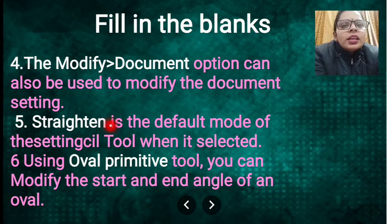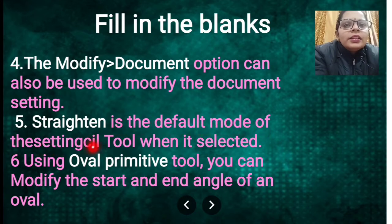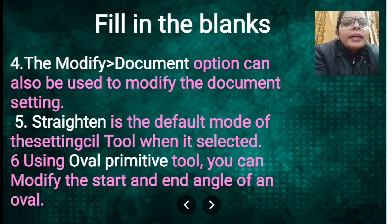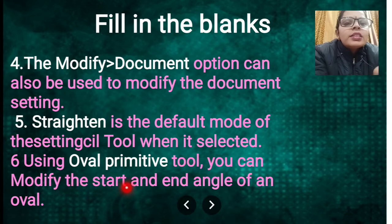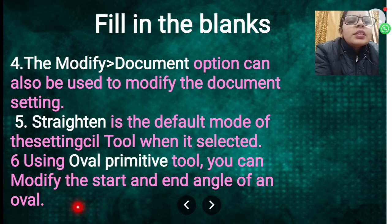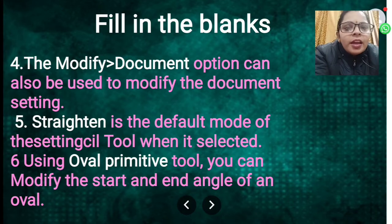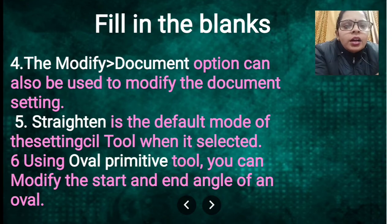Next fill in the blank: the blank is the default mode of the pencil tool when it is selected. The answer is Straighten mode. Next: using the blank tool you can modify the star and angle of the oval. The answer is Oval Primitive tool — for the oval shape we use the Oval Primitive tool.